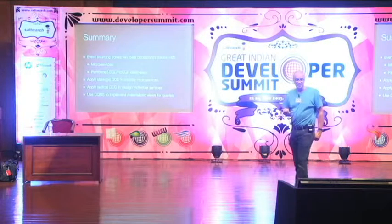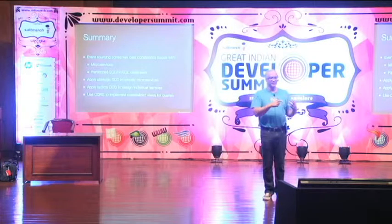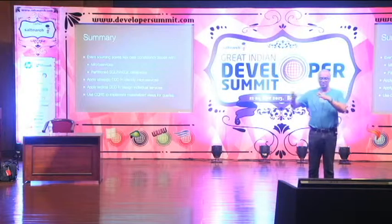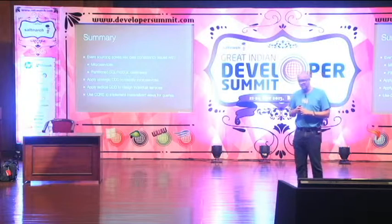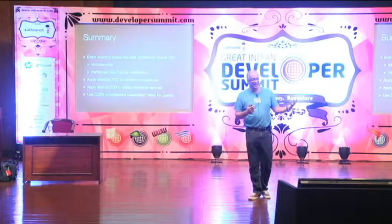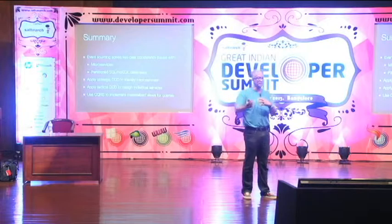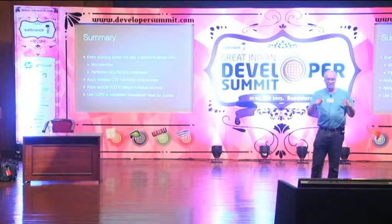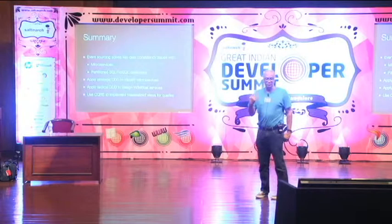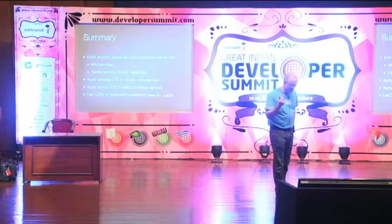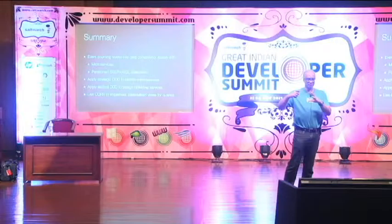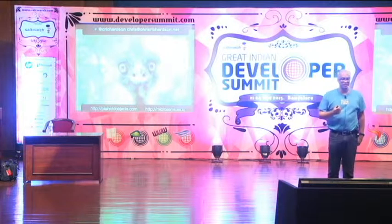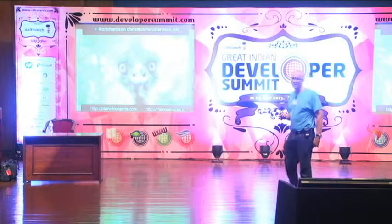So that's my talk. The key ideas are that event sourcing solves key data consistency issues with microservices and with modern polyglot persistent partitioned database architectures. You want to apply DDD both strategically and tactically: apply strategic DDD to identify the microservices, then tactical DDD to design the individual services. And you use CQRS to implement materialized views for the various queries you need to support. It's quite a different approach from the traditional monolith relational database architecture. I hope you found it useful. Please follow me on Twitter, send me email, check out my blog, and check out microservices.io. Thank you.